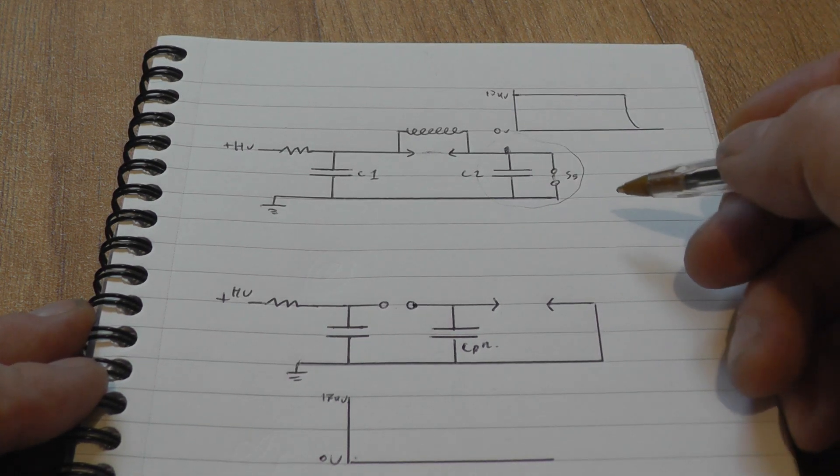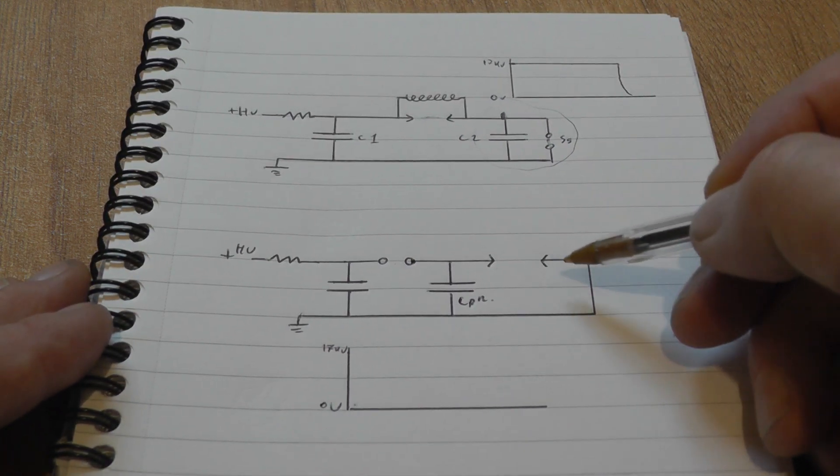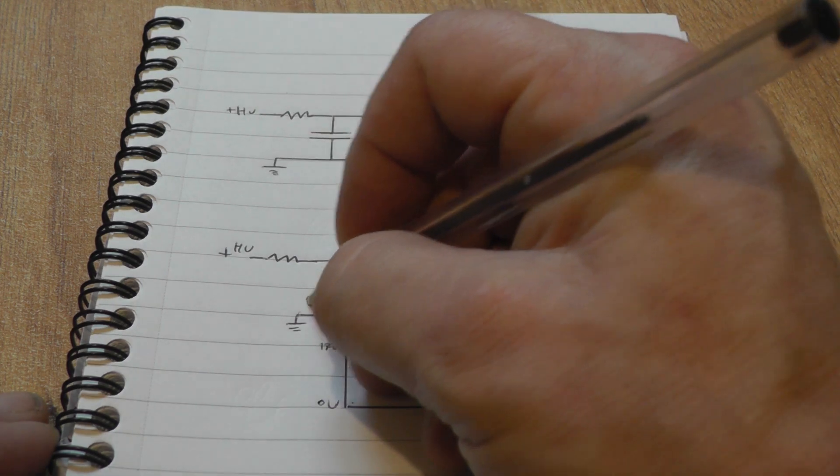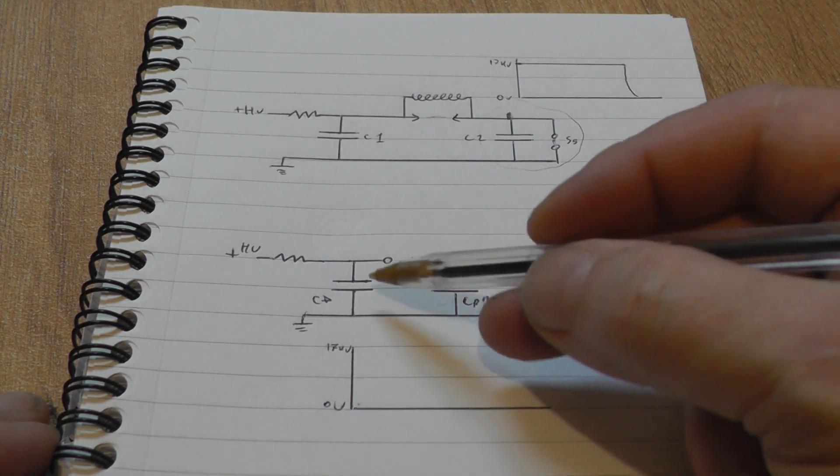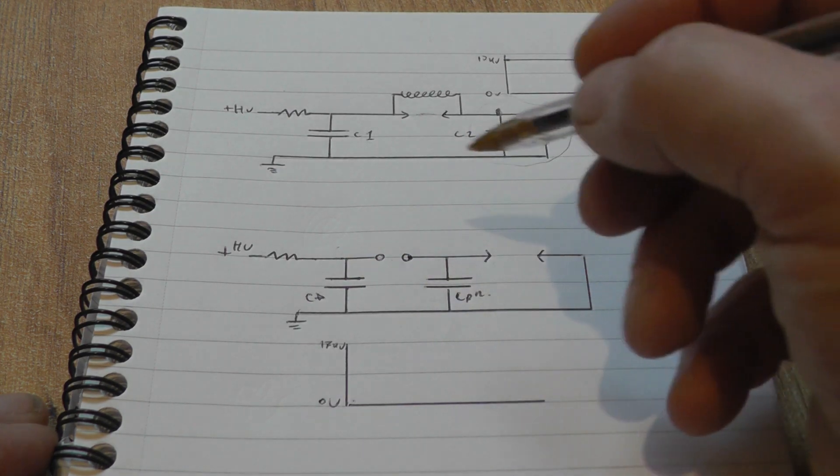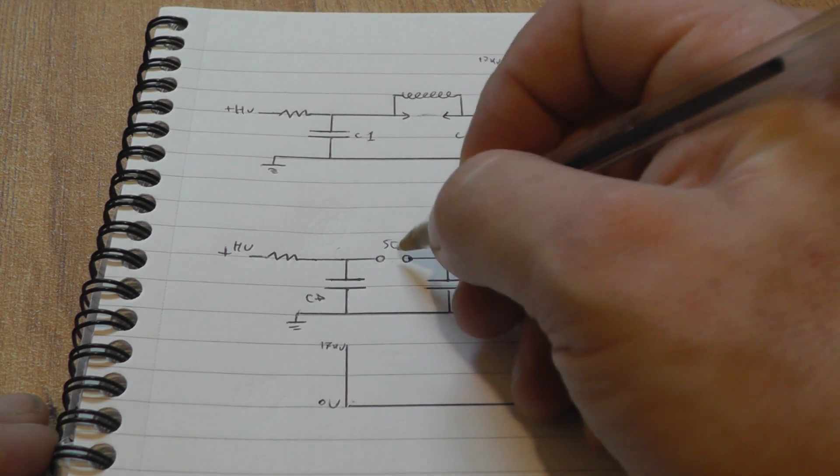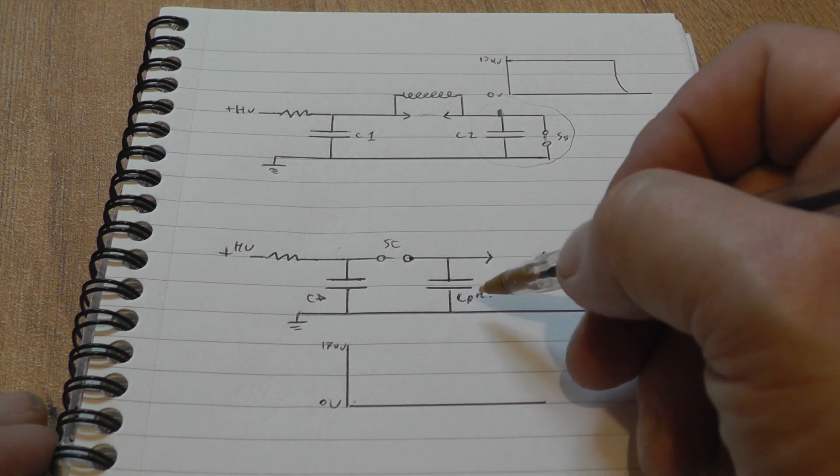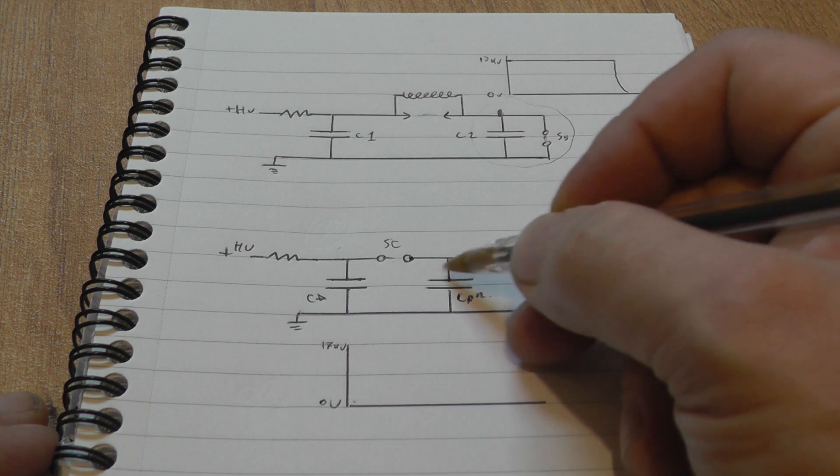If we take a look at the charge transfer circuit, this is a little bit different. We've got a dumping capacitor, CD, over one side, and the idea is that we charge our dumping capacitor up first. Then when the spark gap fires, we abruptly try and charge our peaking capacitor.